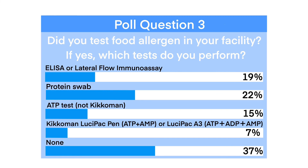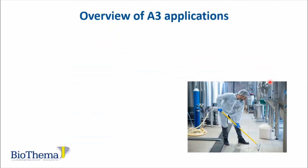37% said none. 22% said protein swab. 19% said ELISA or lateral flow. 15% said ATP test, not LUCIPAC. And 7% said the LUCIPAC PEN or LUCIPAC A3.